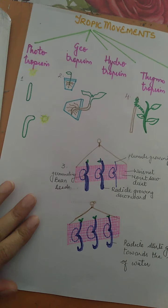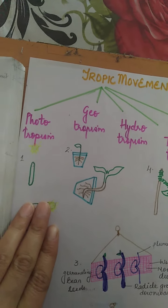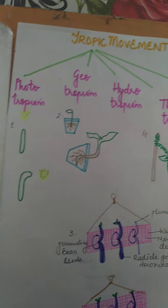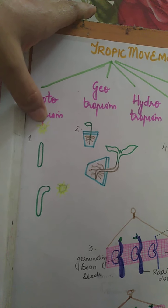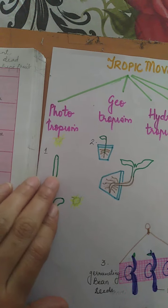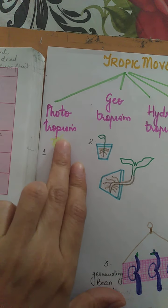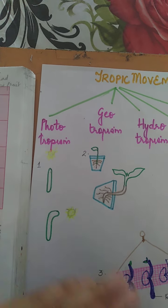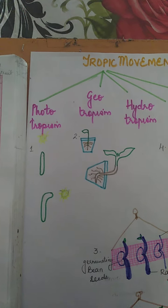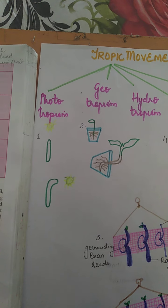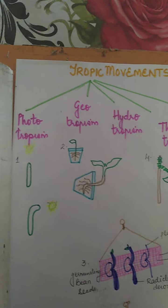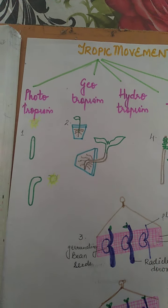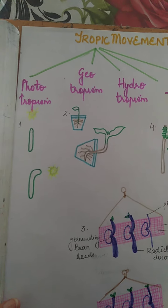First is phototropism. 'Photo' is related to light. When the source of light is above the plant, the shoot generally grows upwards. When the source of light turns to any direction, the shoot shows bending towards that source of light. So the shoot is moving towards the light — we can say that shoots are positively phototropic, meaning they bend towards the source of light.